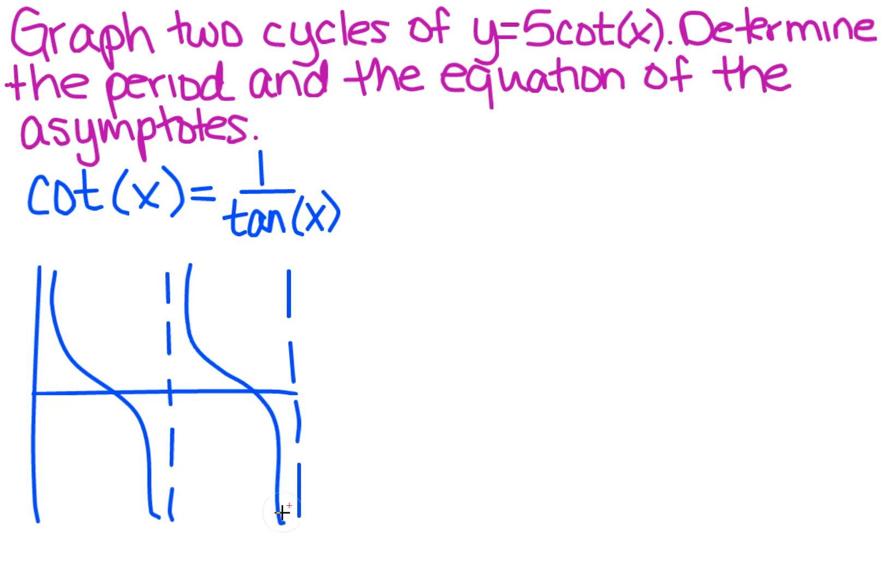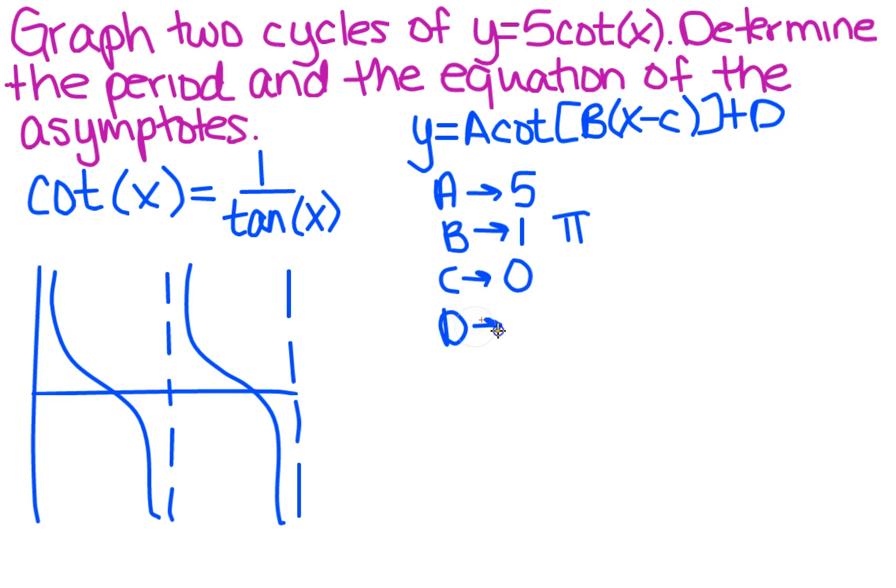So what key pieces do we need here? Well, we have our standard form, which is y equals a cotangent bracket b times x minus c plus d. So we know what a is. That's given to us already. That's a 5. b is just 1, so that means that our period is going to be pi. c is 0 and d is also 0.